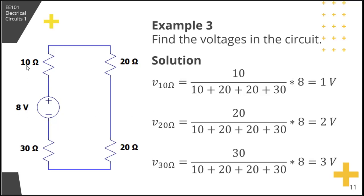If you look at it, 10 ohm has 1 volt, 20 ohm has 2 volts, another 20 ohm has 2 volts, 30 ohm has 3 volts. So 1 plus 2 plus 2 plus 3. So 1 plus 2 is 3, plus 2 more is 5, plus 3 more is 8. So 8 volts voltage drop equals the source voltage of 8 volts. Therefore, it's correct.